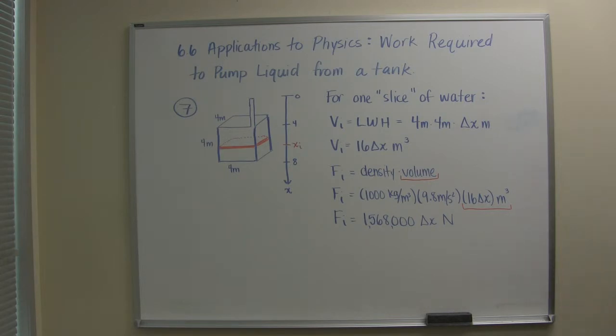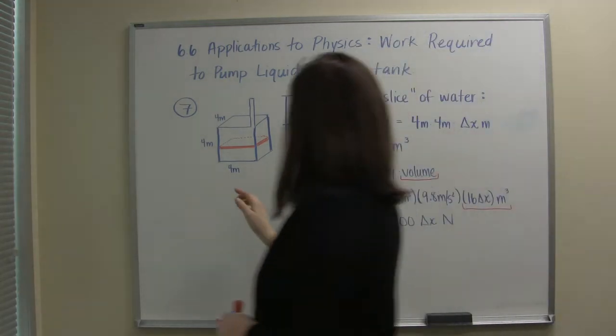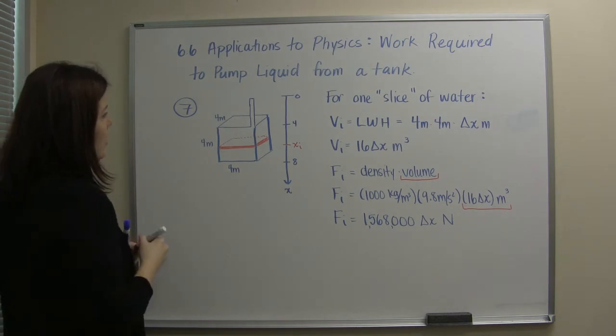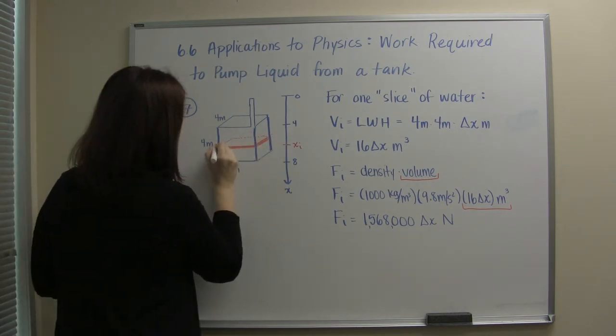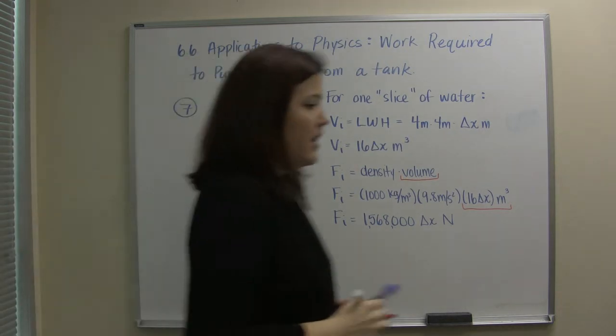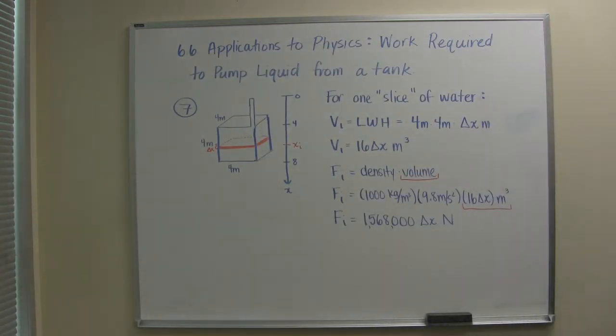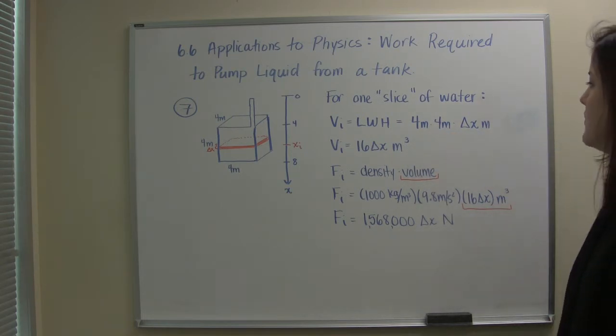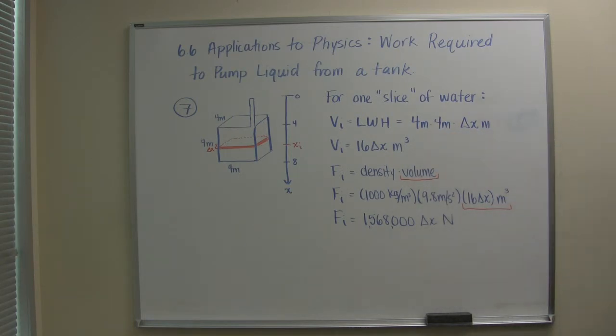So the first thing we need to know for this one little slice of water is its volume. So we use our volume formula length width and height. Here we have a length and a width of four but we're going to go ahead and call this height right here delta x. Whatever delta x we want. Each one of those is in meters. So if we look at the volume we have four meters times four meters times the change in x delta x meters. So just for this one slice of water it has a volume of 16 delta x meters cubed.